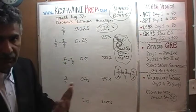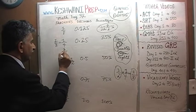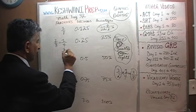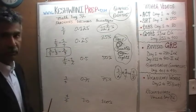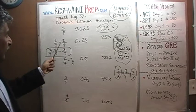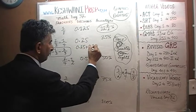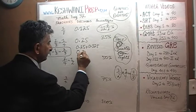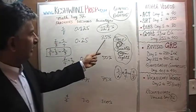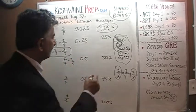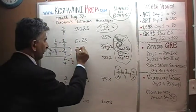Now that we know one eighth, everything is downhill from here. Three eighths equals two eighths plus one eighth. Two eighths is a quarter, which is 25%, plus 0.125. Adding them gives 0.375, or 37 and a half percent. So we have our one eighth, two eighths, and three eighths.